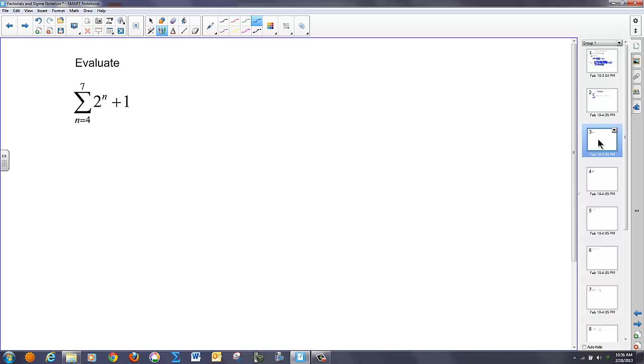So we're going to evaluate the series of two to the n plus one as n goes from four to seven. What that means is I start with an n value of four and plug it into the n in the explicit formula. So that's going to get me two to the fourth plus one, and then I increment that n value by one. So I have two to the fifth plus one, two to the sixth plus one, and finally, I get to two to the seventh plus one. And then I want to take and add all those values up.